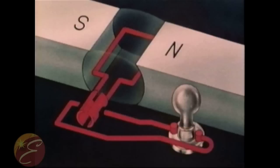The commutator is a collar divided into segments, insulated one from the other. We attach one end of the coil to one of the segments and the other end to another segment.